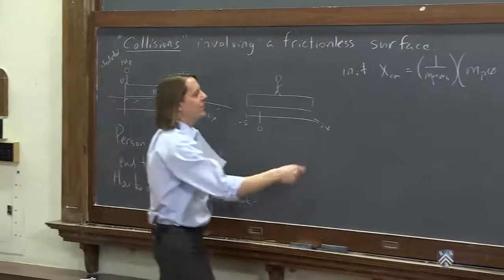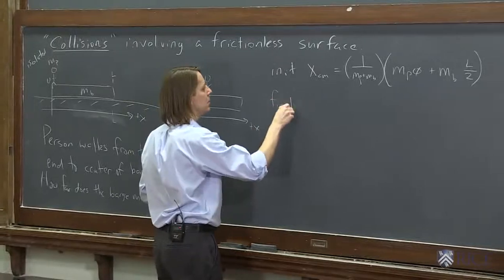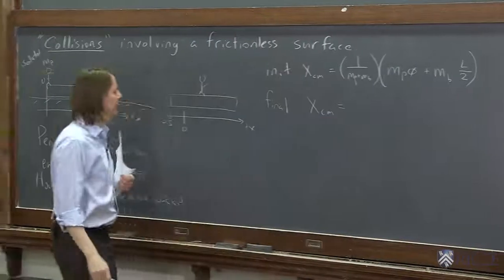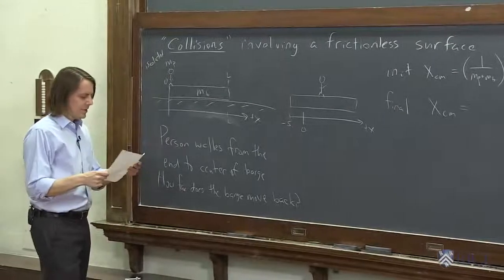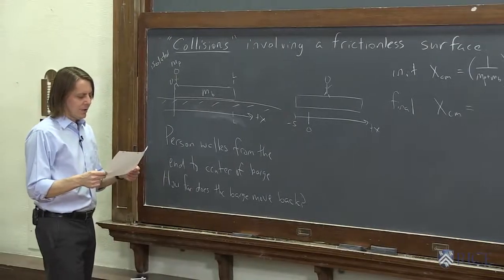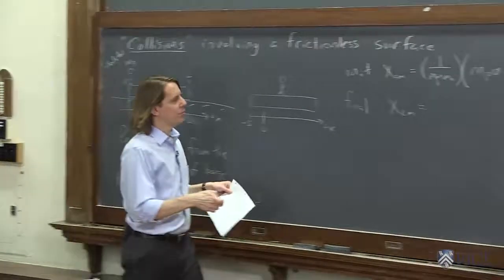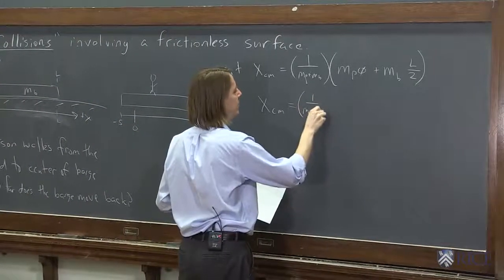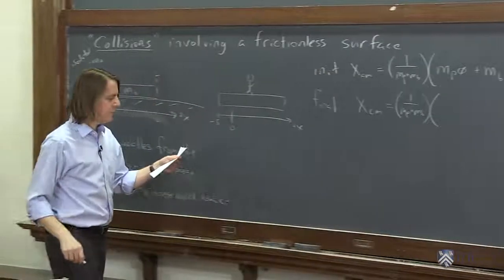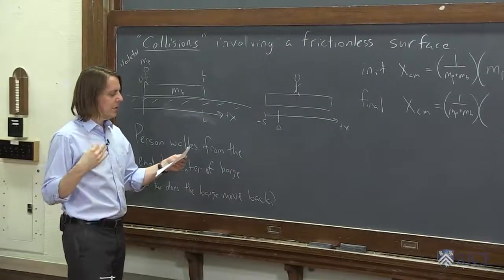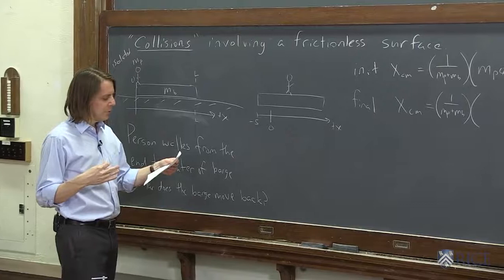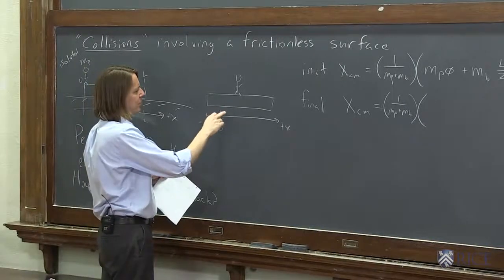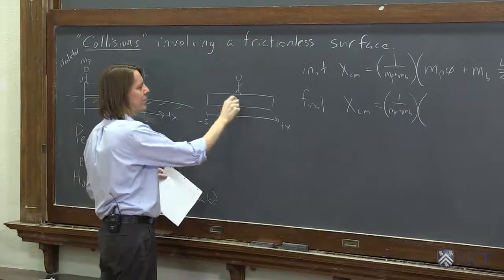Now let's look at the final, where everything is shifted around. The final center of mass, where is it? Let's see how we want to write that. Again, it's 1 over the total, 1 over mp plus mb, and now it's my position times my mass times my position plus the center of the barge times its position. So my position is what? I walked forward, I walked to the middle,